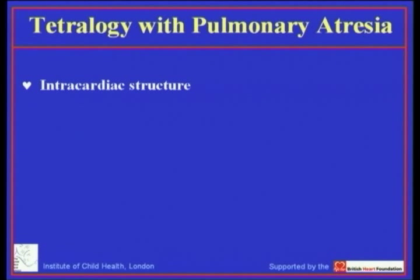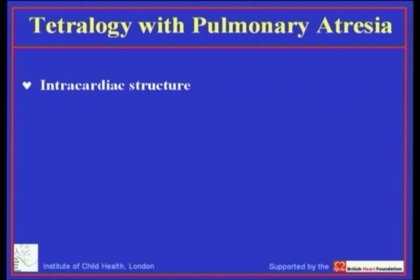Tetralogy with pulmonary atresia is one subset of pulmonary atresia with ventricular septal defect. Many people continue to describe it simply as pulmonary atresia with ventricular septal defect, but this subset stands out as an entity in its own right, primarily because of the arrangement of the pulmonary arteries. At least nine-tenths, and maybe even 98%, of hearts with this pulmonary arterial anatomy have the intracardiac anatomy of tetralogy.